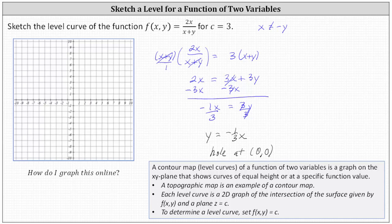And now to graph the level curve, we'll make an open point at the origin. Notice this would be the vertical or y-intercept. And now because the slope is negative 1 third, to find additional points, we can go down one right three, down one right three, as often as we want until we get to the edge of the coordinate plane.